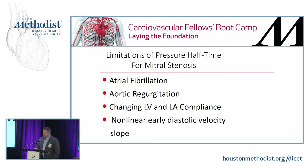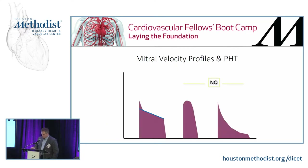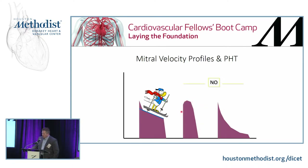There are limitations to pressure halftime as well. Beat-to-beat variability with atrial fibrillation can interfere with accurate measurement. Aortic regurgitation, which is a high flow state, changing LV and left atrial compliance, and a non-linear early diastolic velocity slope are all limitations. You want to take the longest, most consistent slope — the bunny hill, not the black diamond. Here are two contraindicated examples where you have rapid change in slope one way or the other; neither of those will give an accurate reading when trying to grade mitral stenosis.